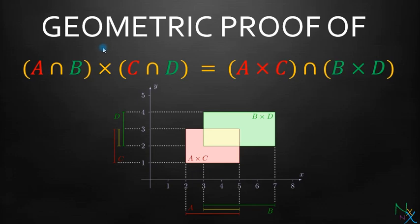Hi guys, welcome back. In this lecture we will see geometric proof of the identity A intersection B cross C intersection D is equal to A cross C intersection B cross D.